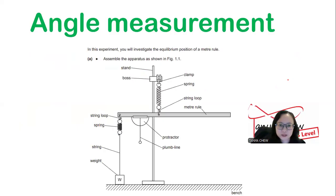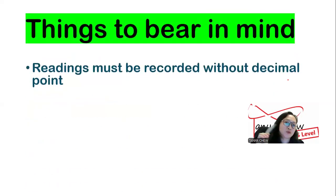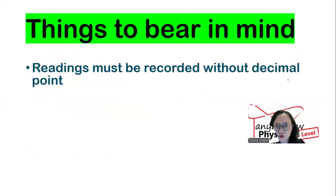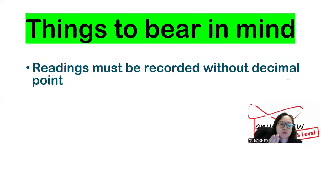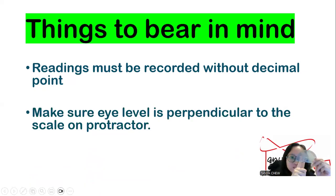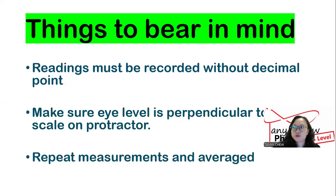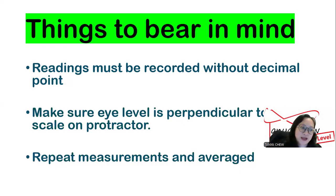The next type is angle measurement using a protractor. Readings must be recorded without a decimal point because the sensitivity — the smallest division — of a protractor is one degree. Make sure your eye level is perpendicular to the scale on the protractor to avoid parallax error. Repetition of measurements is a must, and find the average afterwards to reduce random error that could have occurred during your experiment.